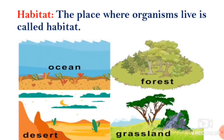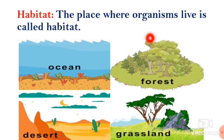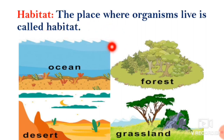First, what is meant by habitat? Habitat means the place where organisms live is called habitat. The place where organisms are living — that home — is known as habitat. Habitat means a dwelling place, and dwelling place means a home.